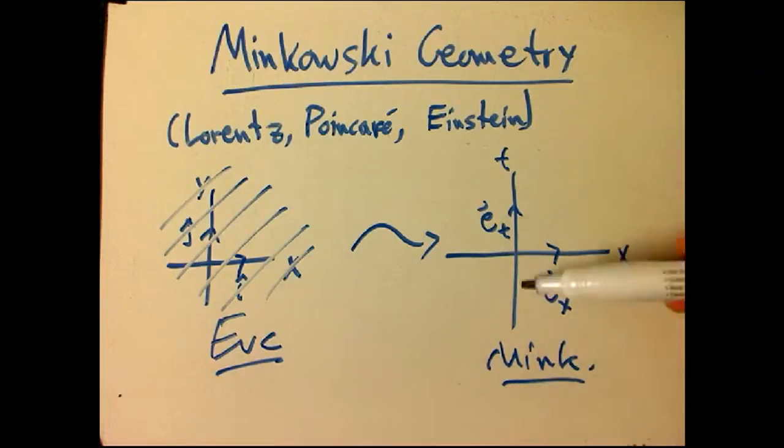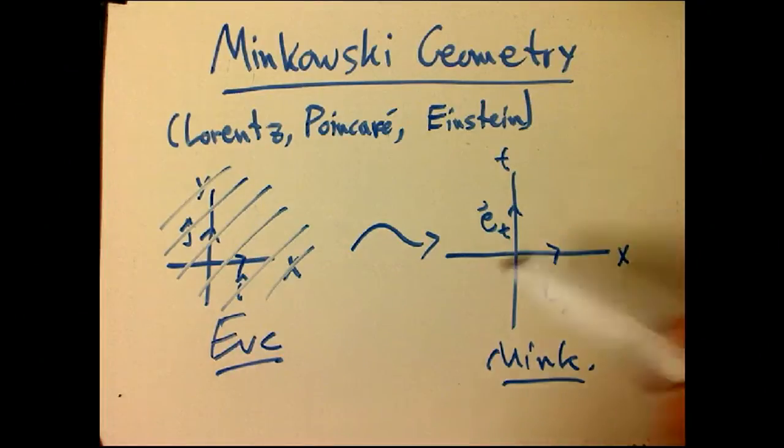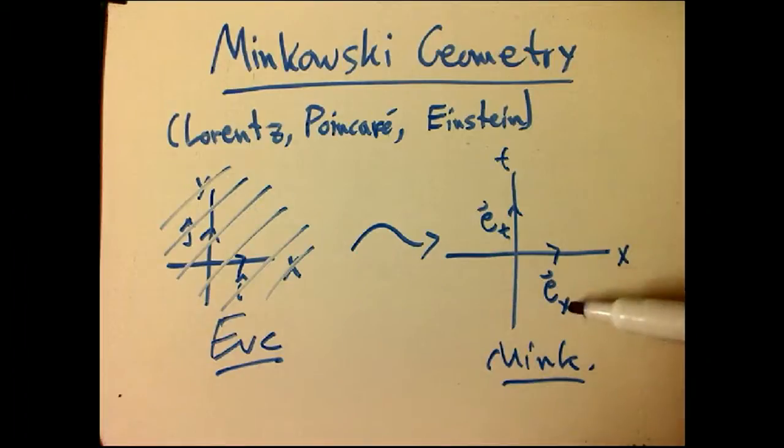I'm going to very suggestively label the other coordinate t, even though that has no real significance yet, but it's going to be time eventually. There's going to be space, there's going to be time, and E sub x and E sub t are going to be the unit vectors that we're going to use instead of i and j. But that's just the notation.